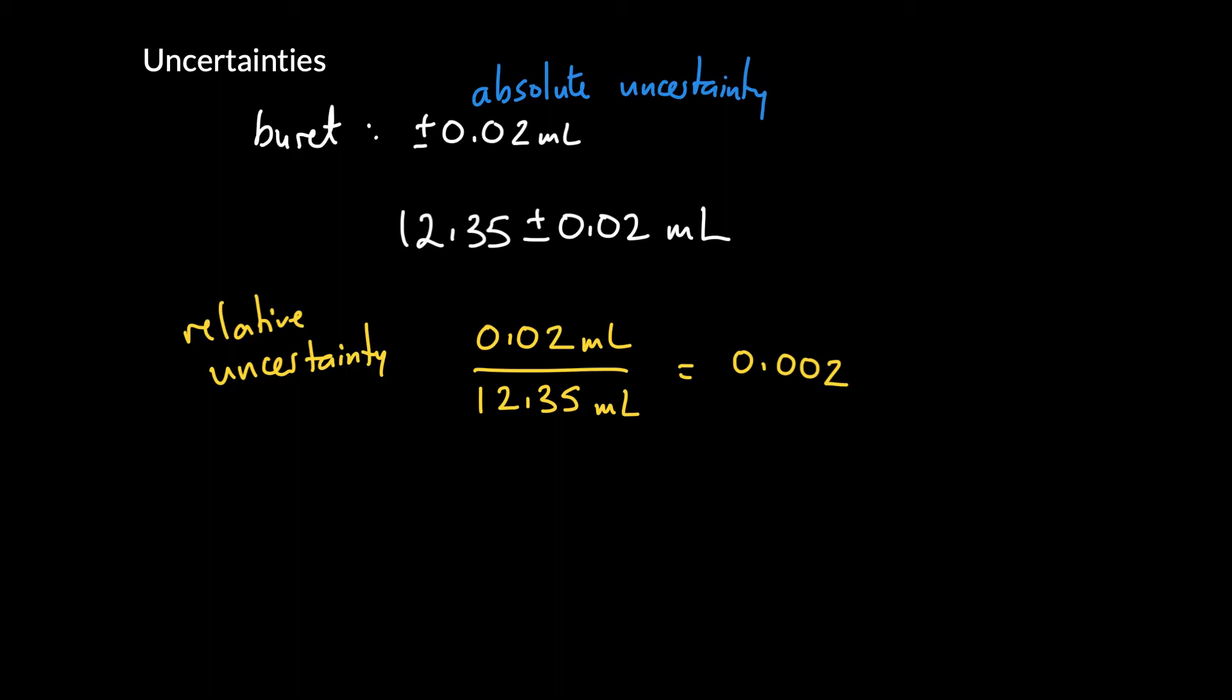Notice it's a dimensionless number. We can also calculate the percent relative uncertainty, and we basically just change the fraction into a percent. So it's essentially just 100 times by the relative uncertainty. So in this case here, it would be 0.2%.